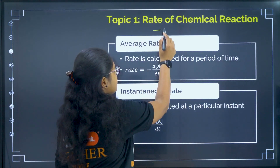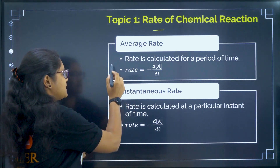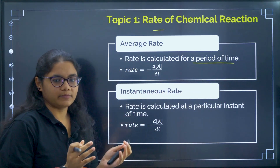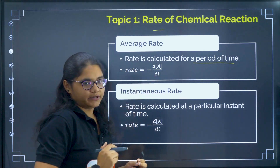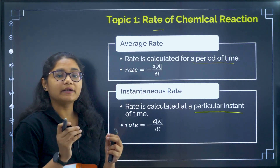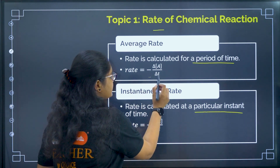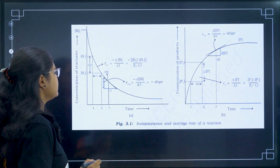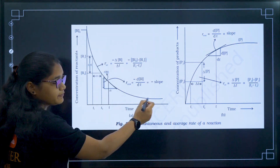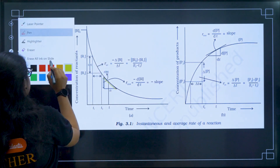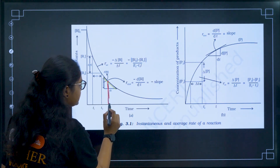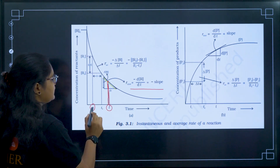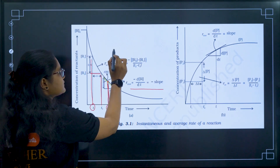Now let us start with the first topic: rate of a chemical reaction. We have generally two types of rate — average rate and instantaneous rate. Average rate is where the rate is calculated for a period of time, like 10 or 20 minutes. Instantaneous rate is where we calculate the rate at a particular instant. The difference: average rate is represented with delta, and instantaneous rate with D.